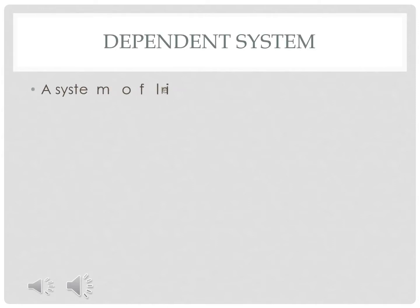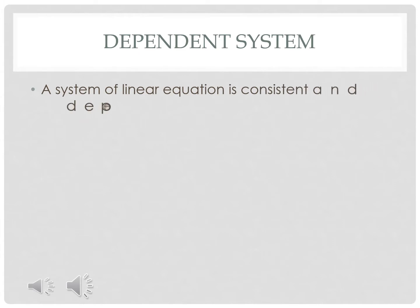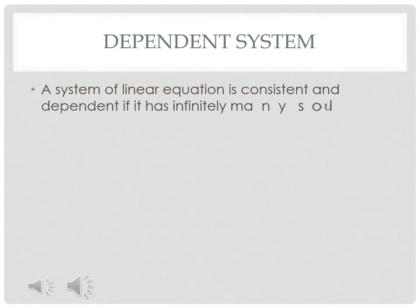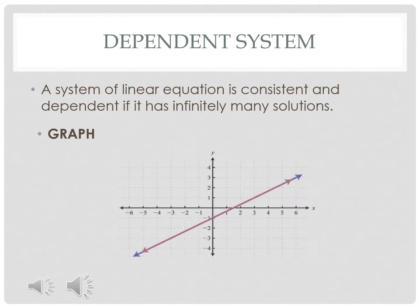The second classification is the dependent system. A system of linear equations is consistent and dependent if it has infinitely many solutions. This is the graph of a dependent system.